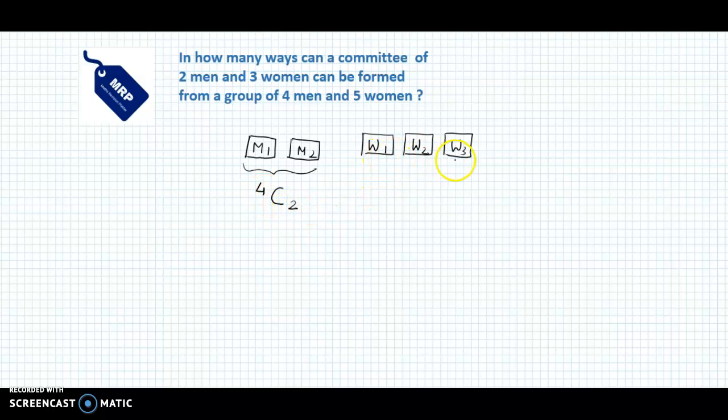And these 3 women would be selected from the 5 women in 5C3 ways. So from 5 you need to select 3 women.